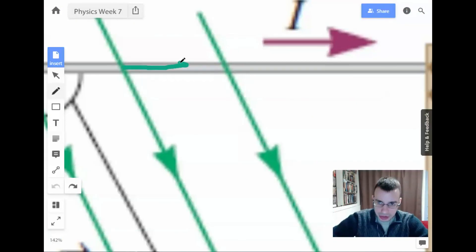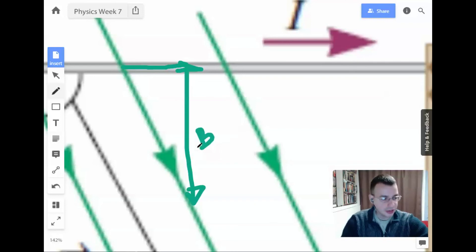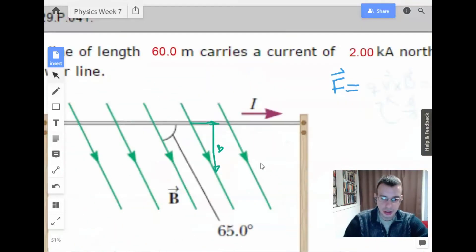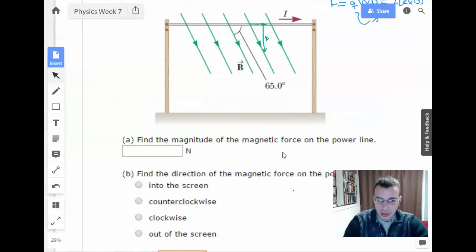Okay, so let's decompose this vector. And this will be our magnetic vector. So now looking at this guy, we have find the magnitude of the magnetic force on the power line.